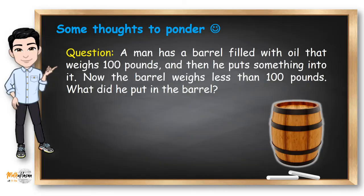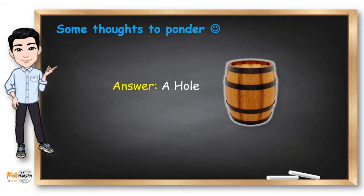How about this one? A man has a barrel filled with oil that weighs 100 pounds, and then he puts something into it. Now the barrel weighs less than 100 pounds. What did he put in the barrel? A hole.